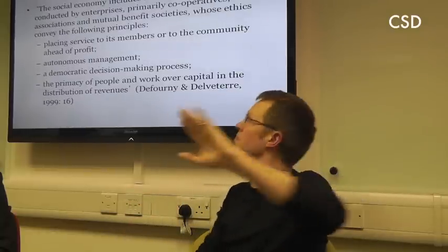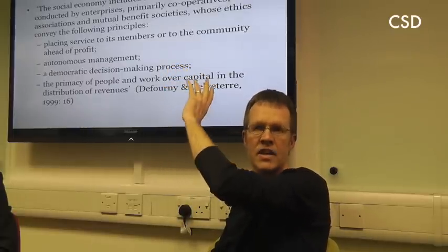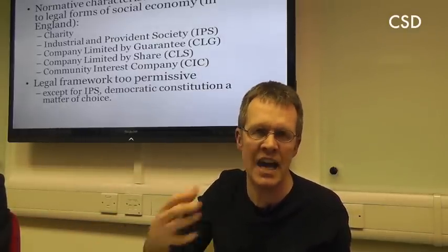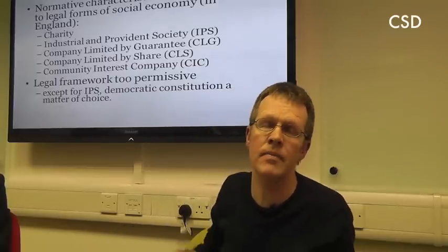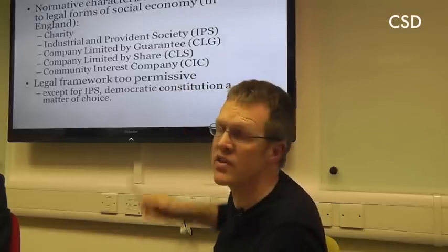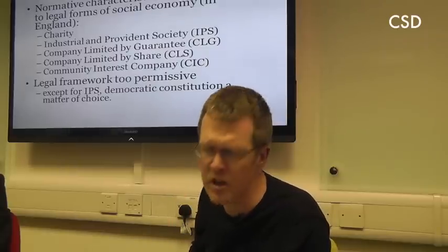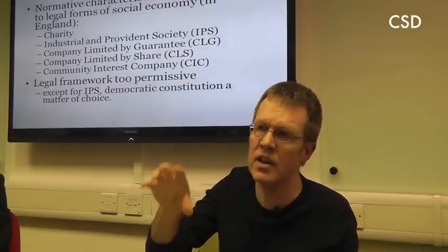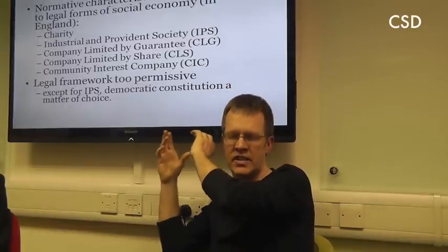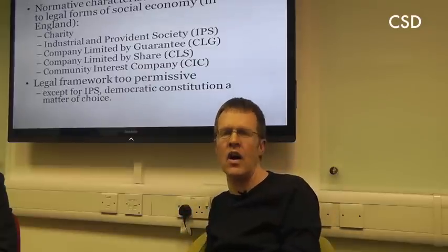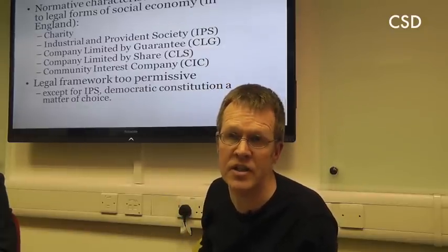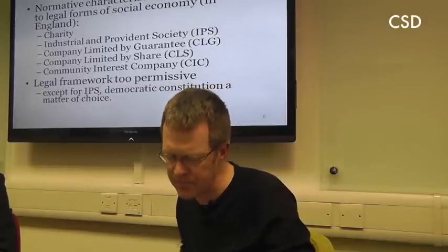This is really a normative account of the social economy, because in practice many organisations we think of as social economy organisations simply don't have that democratic structure, don't enable participation. There is no requirement within charity law, CLGs, CLSs, or CICs to require organisations to engage with workers, members, or the geographical community. So we have a mismatch between the existing legal forms and the theoretical desire to prioritise democratic forms of engagement. The legal framework we have is simply too permissive to set about developing an associative democracy.